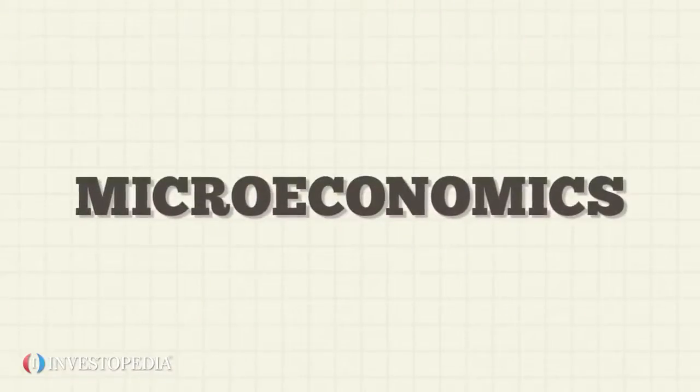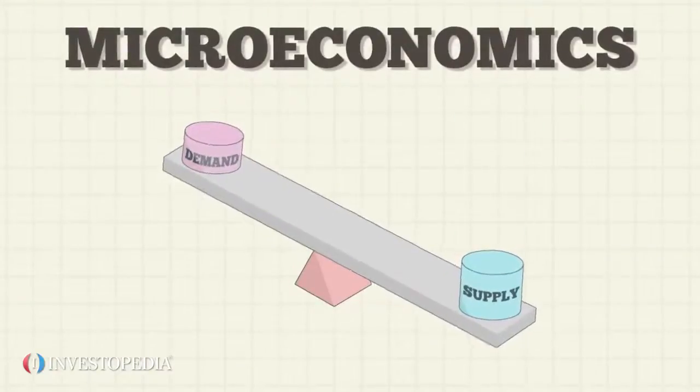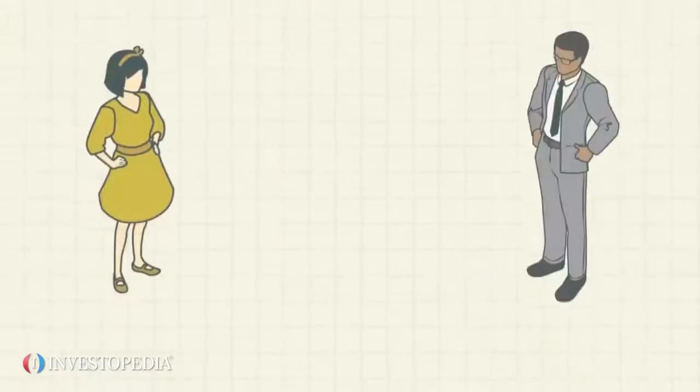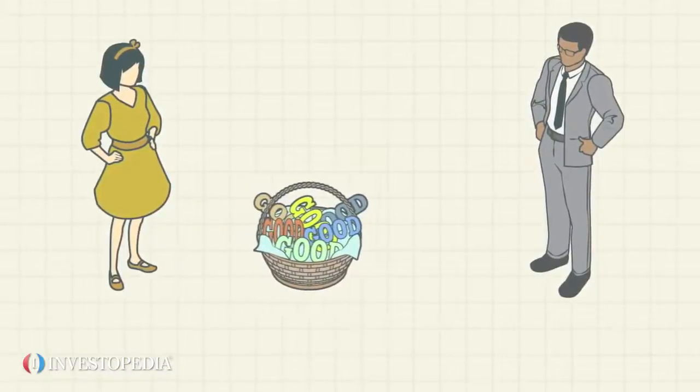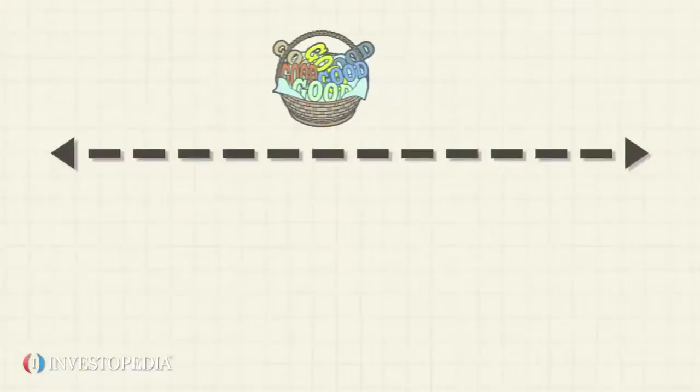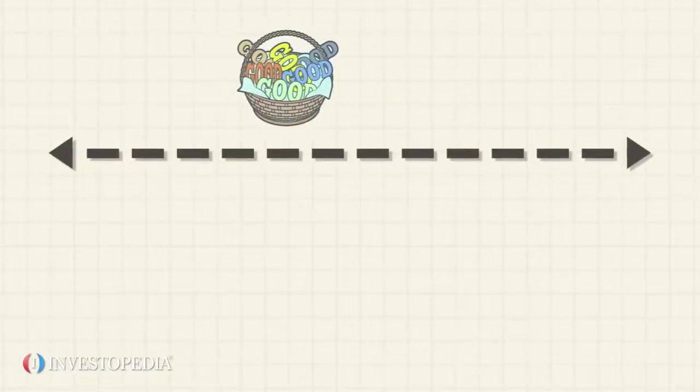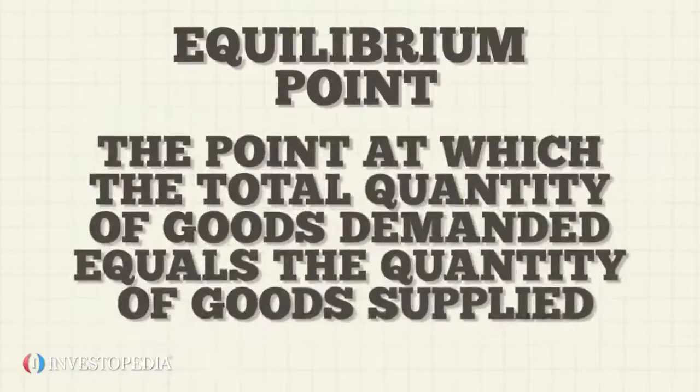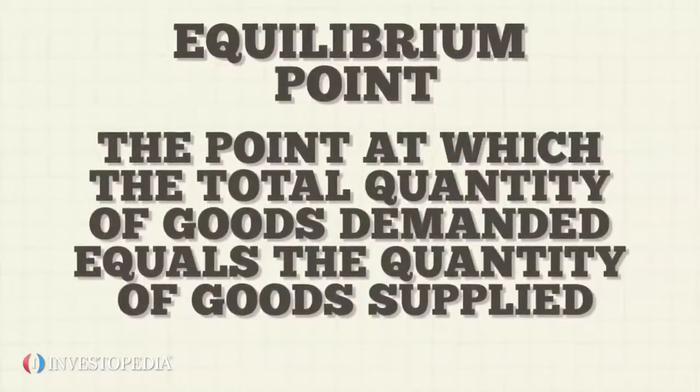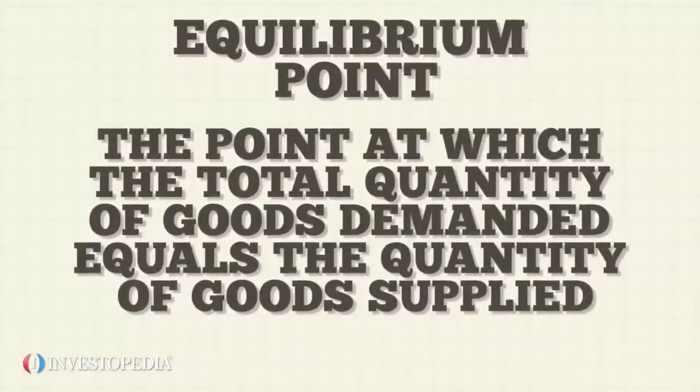One of the most commonly analyzed topics in microeconomics is the model of supply, demand and equilibrium. Under this model, the producers and consumers of a good determine how its price and quantity is traded between them. In a free market, the price of goods will vary until it hits an equilibrium point, which is defined as the point at which the total quantity of goods demanded equals the quantity of goods supplied.